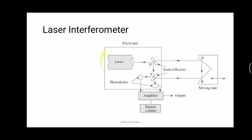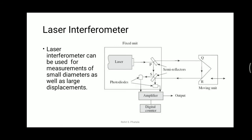The fixed unit contains the laser setup. Consider four semi-reflectors: the first is P, the second is Q, the third is R, and the fourth is S. We consider two paths: the first path is P-Q-R-S and the second path is P-S. These are the two important paths in the laser interferometer.